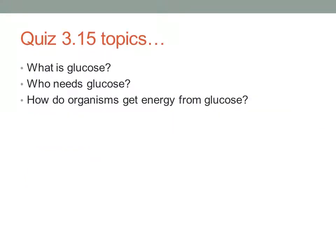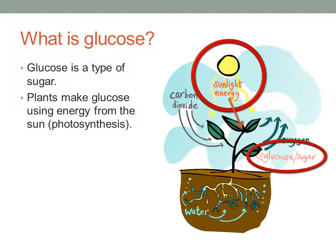So the topics we're going to talk about today are about glucose. What is glucose? Who needs glucose? And how do organisms get energy from glucose? So let's start with what is glucose. Glucose is a type of sugar — we talked about this previously. Sugar is a type of carbohydrate, so glucose is a type of carbohydrate.